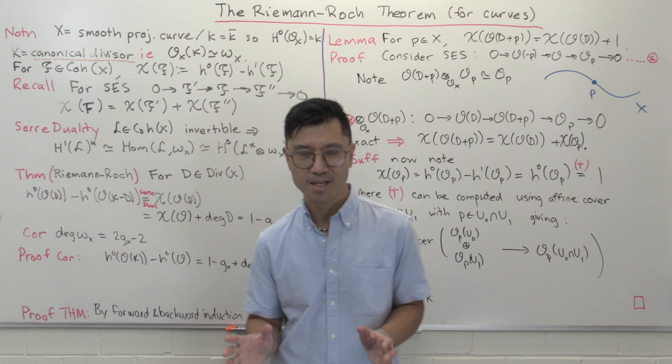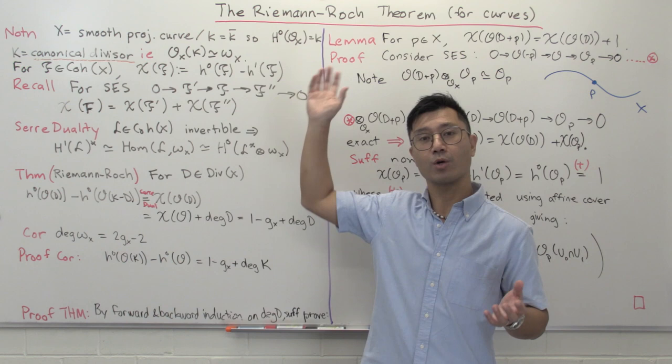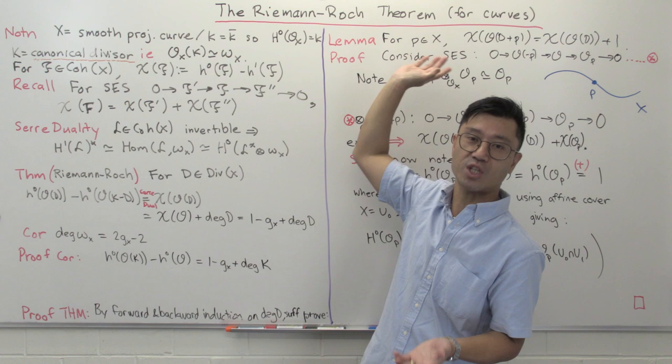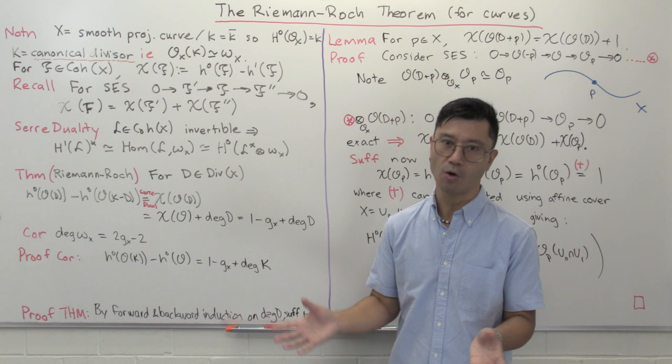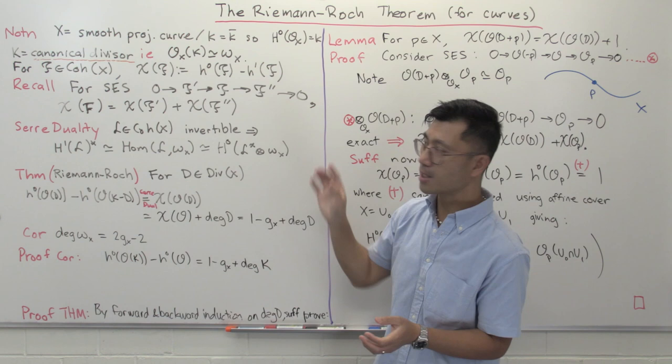Hi, I'm Daniel Chan from UNSW Sydney. Welcome to another adventure in pure mathematics. In this video, I want to tell you about the Riemann-Roch theorem in its original form, which was for smooth projective curves. This theorem is probably the best general formula for studying the Riemann-Roch space of a divisor on a curve, and it's always the first port of call that an algebraic geometer uses for studying that Riemann-Roch space.